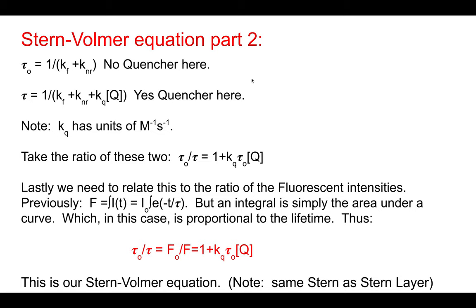Now let's say we have some quencher present. The quenching rate constant is going to be second-order, because we have both quencher and donor — we have to multiply this by the concentration of the quencher for dimensional analysis. So Kf and Knr will each have units of 1/seconds, and the quenching term will end up with units of 1/seconds. Now we're going to take the ratio of tau-zero to tau. You can do that algebra, and so the ratio of tau-zero to tau — where tau is the lifetime with quencher — is equal to this expression.